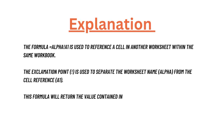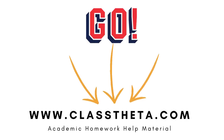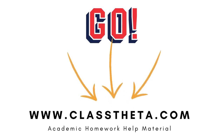The formula alpha!A1 is used to reference a cell in another worksheet within the same workbook. The exclamation point is used to separate the worksheet name 'alpha' from the referenced cell A1. The formula will return the value contained in that cell. That's the correct explanation.